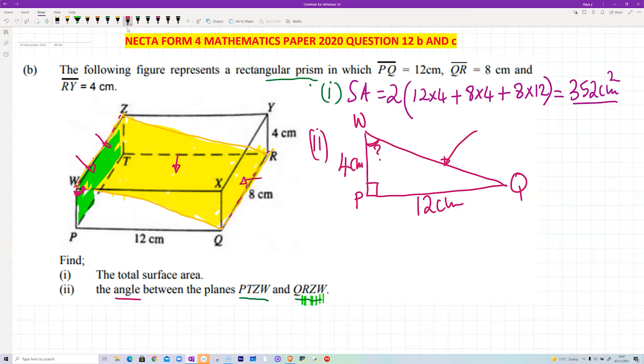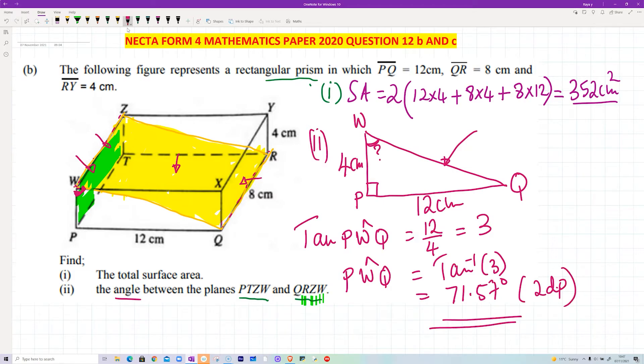We've got the opposite of that angle, and we've got the adjacent of that angle. So we can take tan of that. So if we say tan PWQ, that's going to be equal to the opposite of 12 over 4 guys, and that's equal to 3. So therefore angle PWQ is going to be the tan inverse of 3. If you work this out, then you will have 71.57 degrees correct to two decimal places.